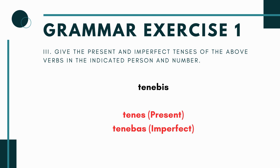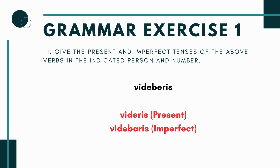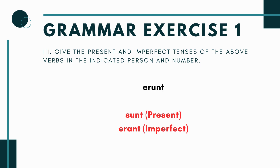Next you have 'tenebis' — that would be 'tenes' in the present and 'tenebas' in the imperfect. Next you have 'videberis' — that would be 'videris' in the present and 'videbaris' in the imperfect. Next you have 'erunt' — it's the verb to be; that would be 'sunt,' they are, in the present and 'erant,' they were, in the imperfect.